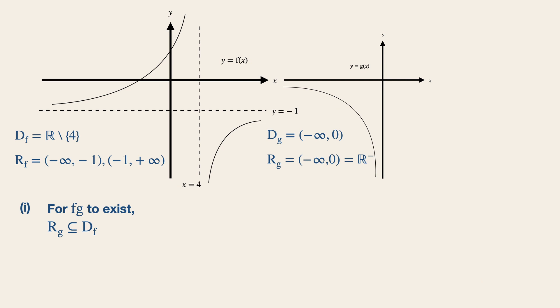In other words, whatever outputs from g must fall within the domain of f for this to exist. You can easily plug in the values from the first part to conclude that this composite function does actually exist.